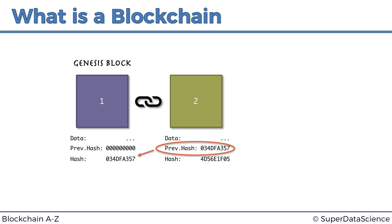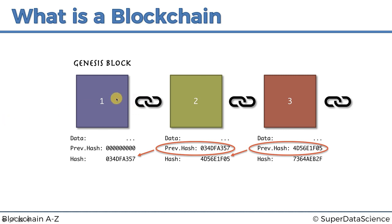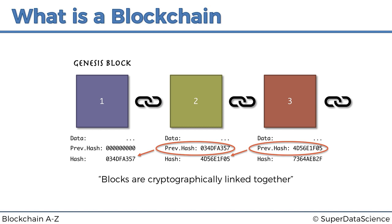If anything were to change at block number one, its fingerprint would change. If anybody were to tamper with the data, this fingerprint would change and it would no longer match the fingerprint stored in the next block. So we would know by looking at that block that somebody tampered with it. Block number three similarly has data, a previous hash, and its own hash — linked to the previous one and so on. Conceptually, if anybody were to tamper with any block, the fingerprints would no longer match up and the chain would be invalid. That's why we say that blocks are cryptographically linked together.